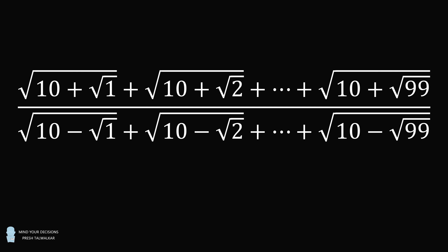Simplify the following fraction. The numerator is the square root of the quantity 10 plus the square root of 1, plus the square root of the quantity 10 plus the square root of 2, and so on, until we add the final term — the square root of the quantity 10 plus the square root of 99. The denominator is the square root of the quantity 10 minus the square root of 1, plus the square root of the quantity 10 minus the square root of 2, and so on, until we add the final term, the square root of the quantity 10 minus the square root of 99. Pause the video if you'd like to give this problem a try, and when you're ready, keep watching to learn how to solve this problem.